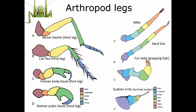The blister beetle, for example, has a pretty straightforward running-type leg. The coxa is basically normal size, the trochanter is moderate-sized, the femur is long but not especially bulbous, the tibia is long, and there are several segments in the tarsus. Coxa, trochanter, femur, tibia, tarsus — it looks pretty straightforward and is used for running.